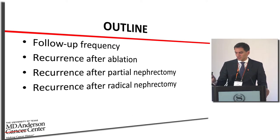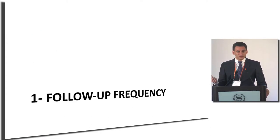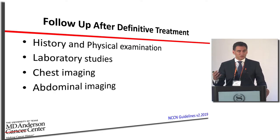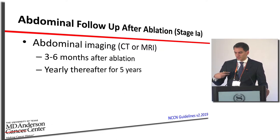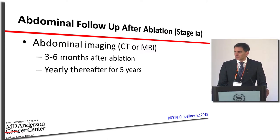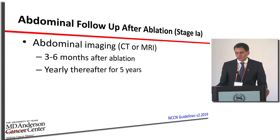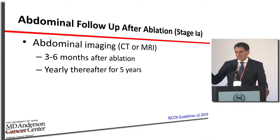Follow-up involves history and physical examination — it's not all about imaging — plus blood work and imaging of the chest, the most common site for cancer to spread outside the kidney. For ablation, the NCCN guidelines recommend abdominal imaging with CT or MRI about three to six months after ablation, then yearly for up to five years. These are generally stage 1a tumors, less than 4 centimeters.